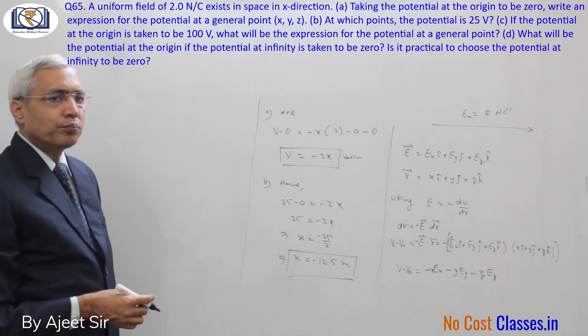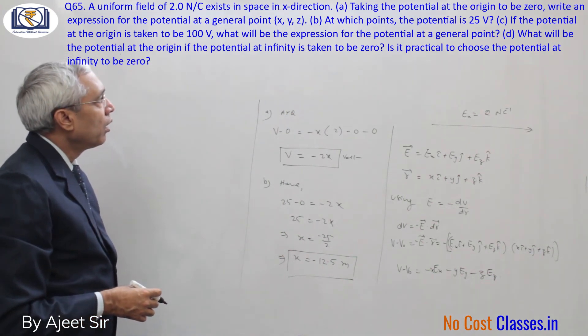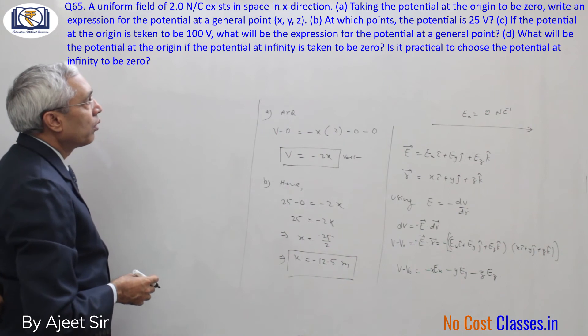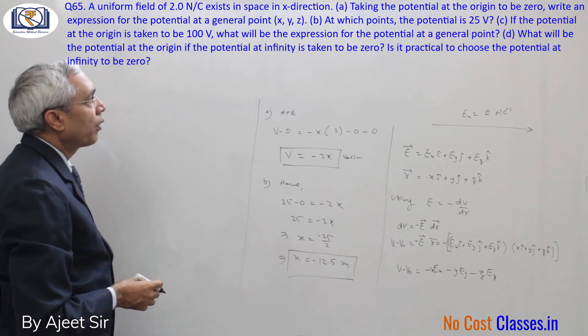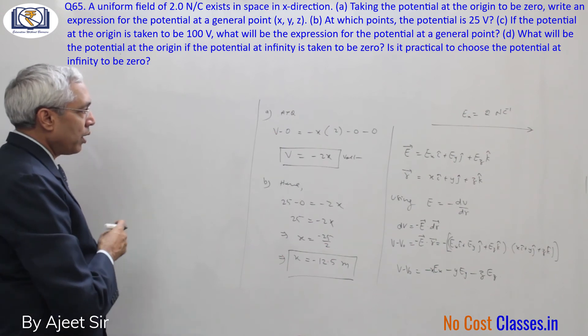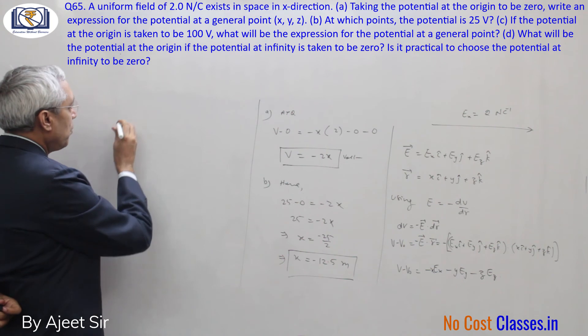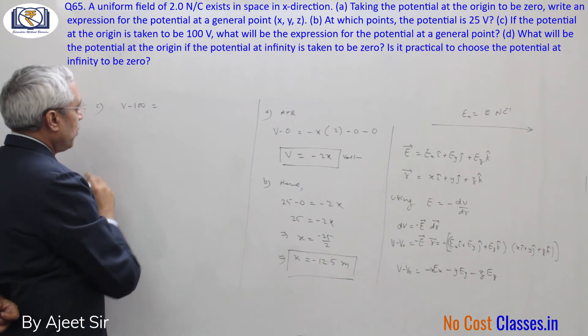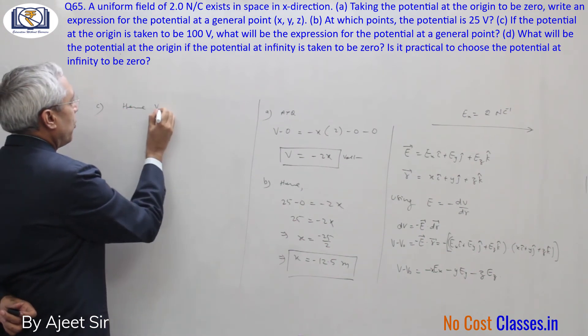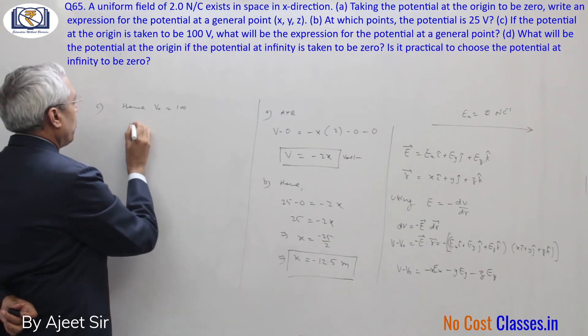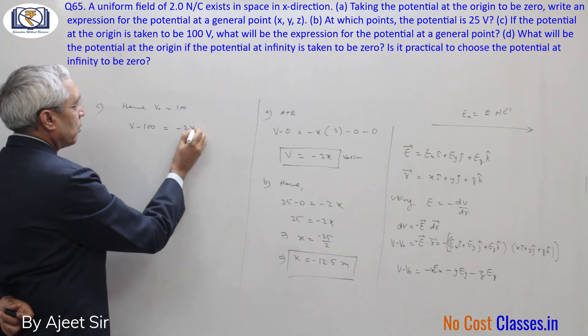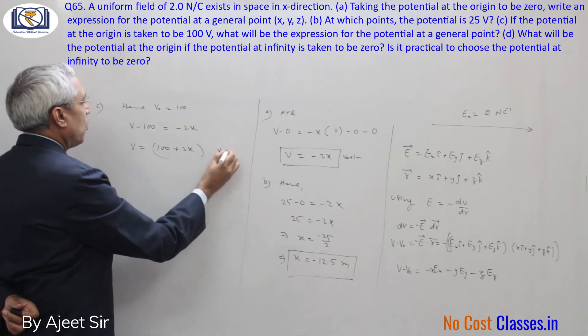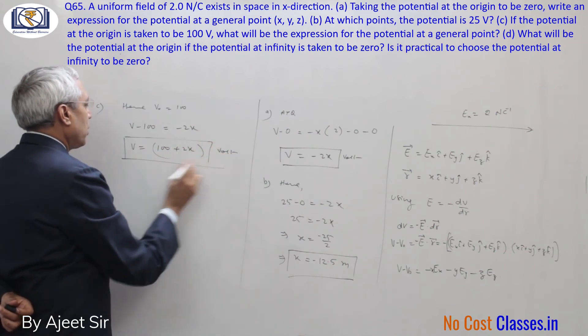In part c, it's asked that if the potential at origin is not zero but hundred, then using the general expression we have V minus 100 equals minus 2x. So V equals 100 minus 2x. This is your third part.